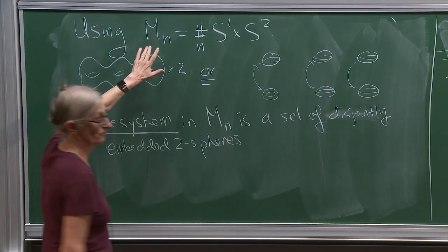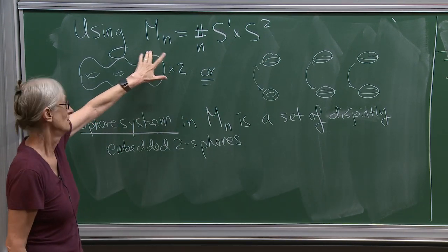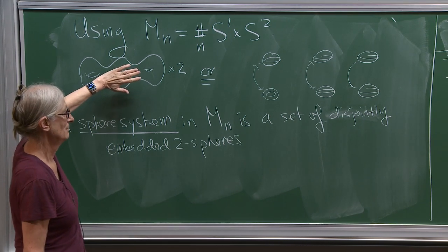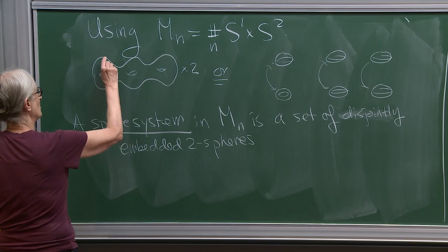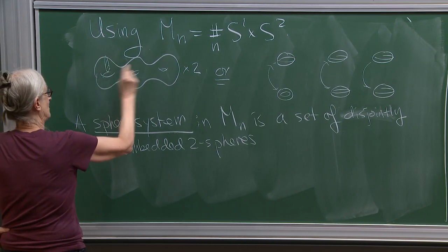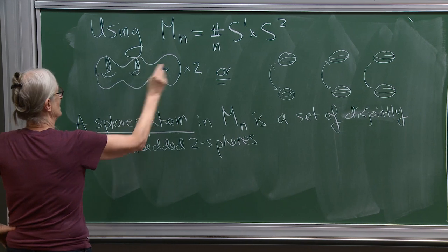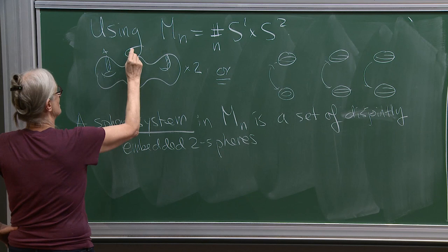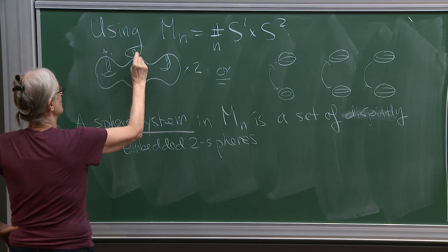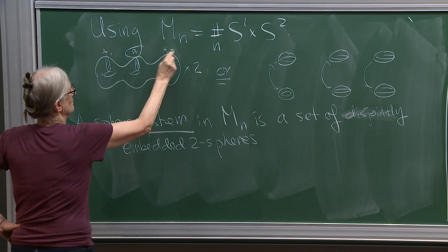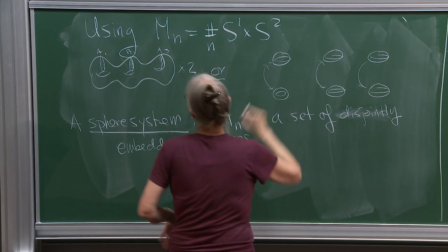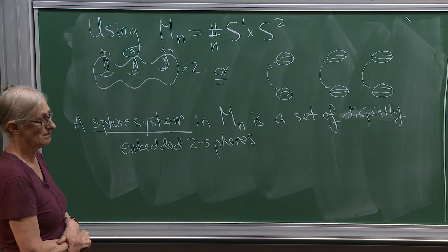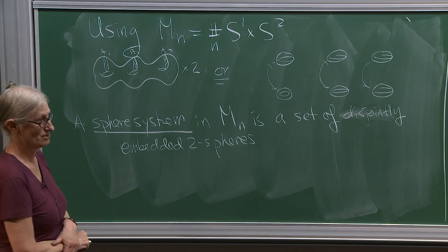Let me show you two pictures of this manifold. One was I took a handle body and doubled it. So what is this picture? I cut my double handle body open along three spheres A1, A2, and A3, and when I cut it open, I got a ball with six patches on it.